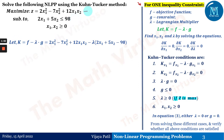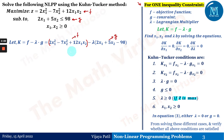Here f is the objective function and g is the constraint. We have two variables x₁ and x₂, and only one constraint g in this example. So we define K = f − λ·g, which gives us K = 2x₁² − 7x₂² + 12x₁x₂ − λ(2x₁ + 5x₂ − 98). Then we differentiate K with respect to x₁.